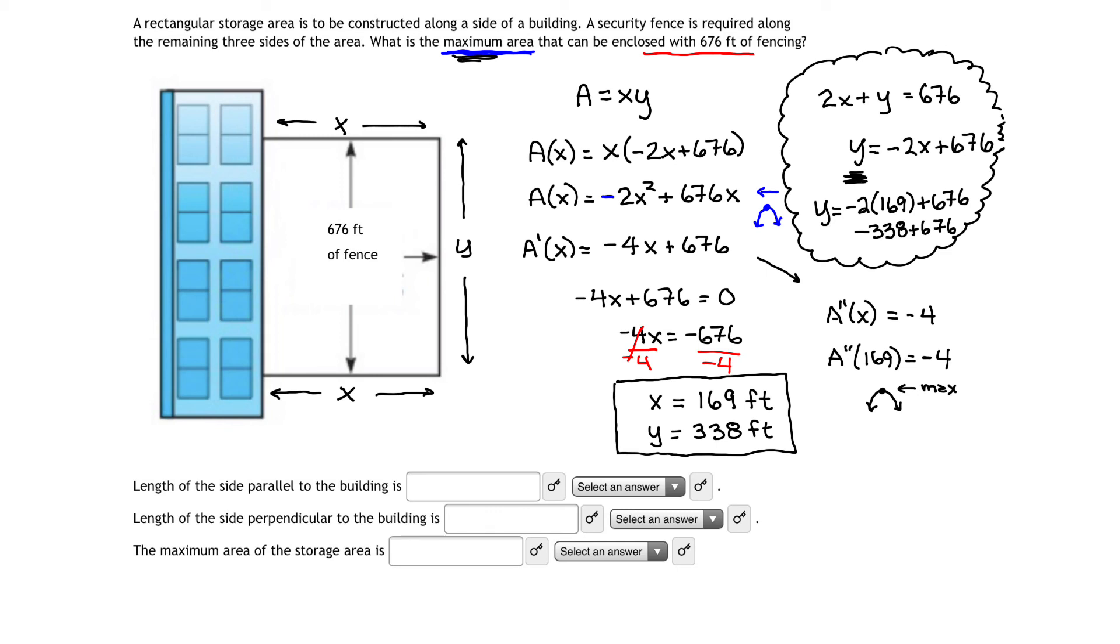The length of the side parallel to the building, to make that happen, is 338 feet. The side perpendicular to the building is my x value, which is 169 feet.